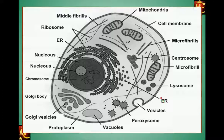Here I have marked two regions of endoplasmic reticulum. The difference is: this ER is attached with ribosomes, so this is called rough endoplasmic reticulum. Here, where ribosomes are not attached, this is called smooth endoplasmic reticulum.